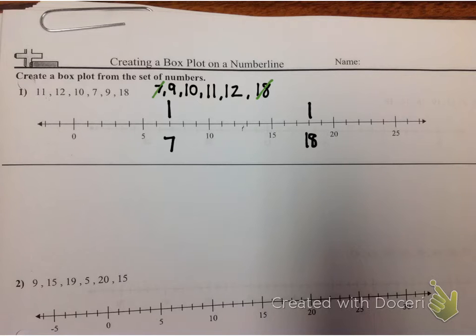My next step is now going to be finding my median, or the middle data point. I'm going to start by crossing out the smallest number and crossing out the largest number. I come to two numbers because it's an even number. I come to 10 and 11.